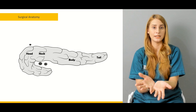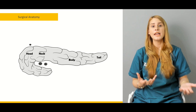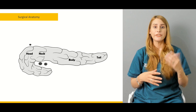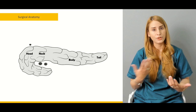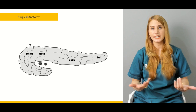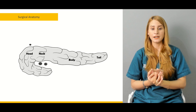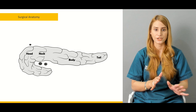The exocrine function of the pancreas involves acinar cells arranged in lobules, producing different enzymes for digestion. These include amylase and lipase for carbohydrate and fat digestion, and trypsin, chymotrypsin, and enterokinase for protein digestion.